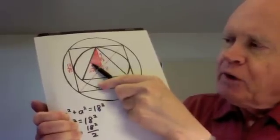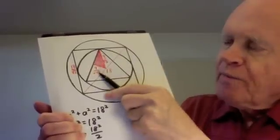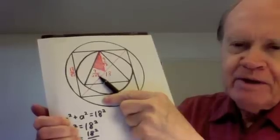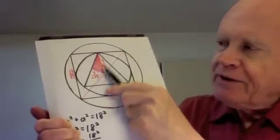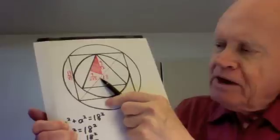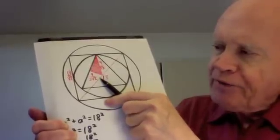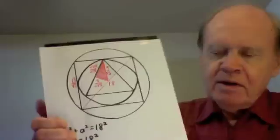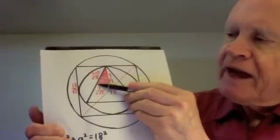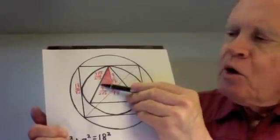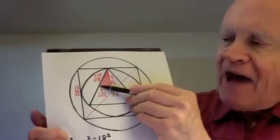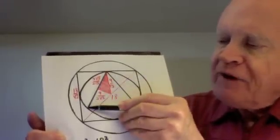To get the longer leg, we multiply that by the square root of 3. That's what you do in a 30-60 right triangle. So that will be 9 root 3 over 2 root 2. So that's this length, 9 root 3 over 2 root 2. That is half of one side of the triangle.